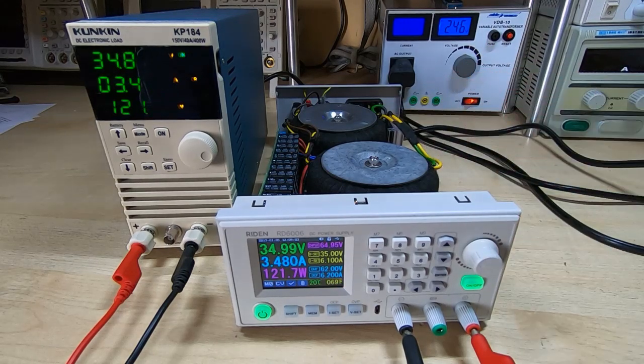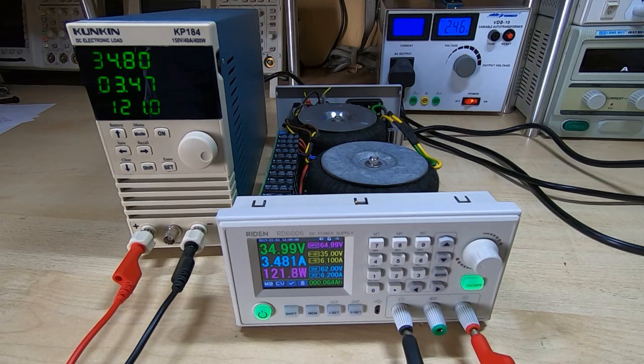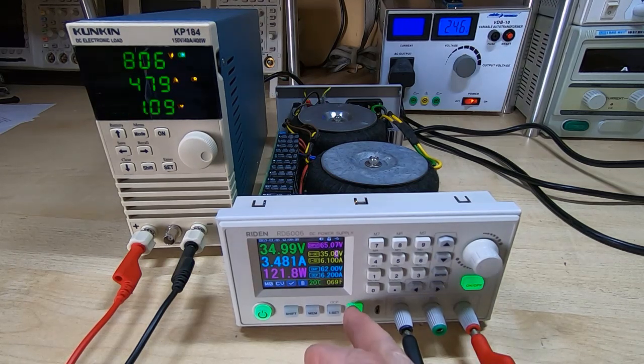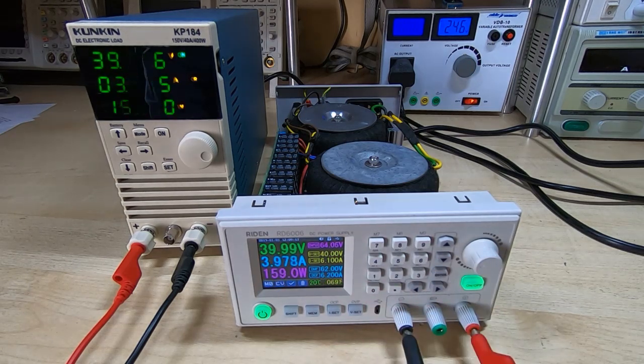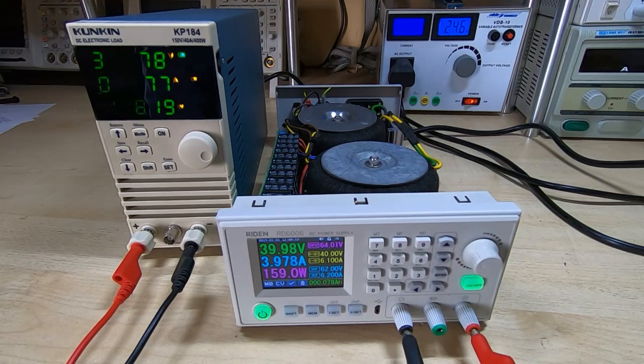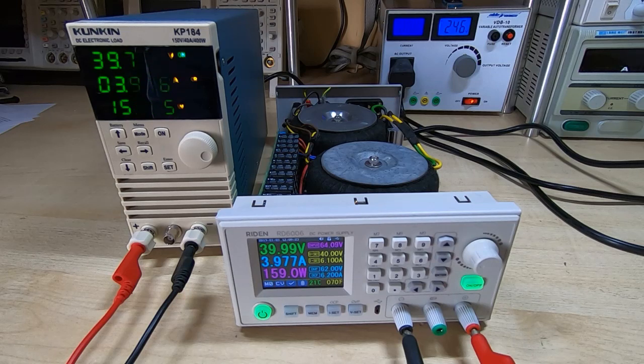It's not really getting warm yet and we're at 121 watts. I'll go up to 40 volts, drawing just under 160 watts, 0.84 amps from the mains, and the input voltage to the Ryden is showing at 64 volts.